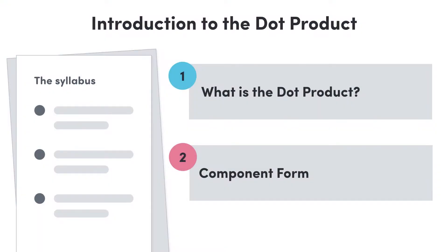Hi everyone, we'll continue to move through this topic on vectors by examining a very key vector idea: the dot product. In this video we'll define the dot product and then look at how the dot product works when our vectors are expressed in their component form. We'll scatter some examples as we go to hammer home this content.